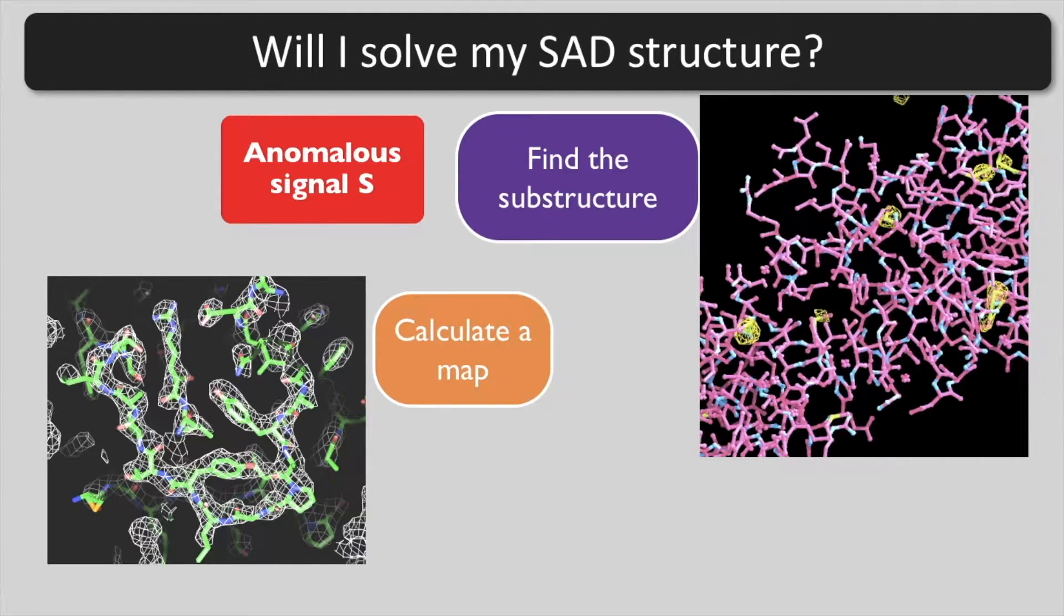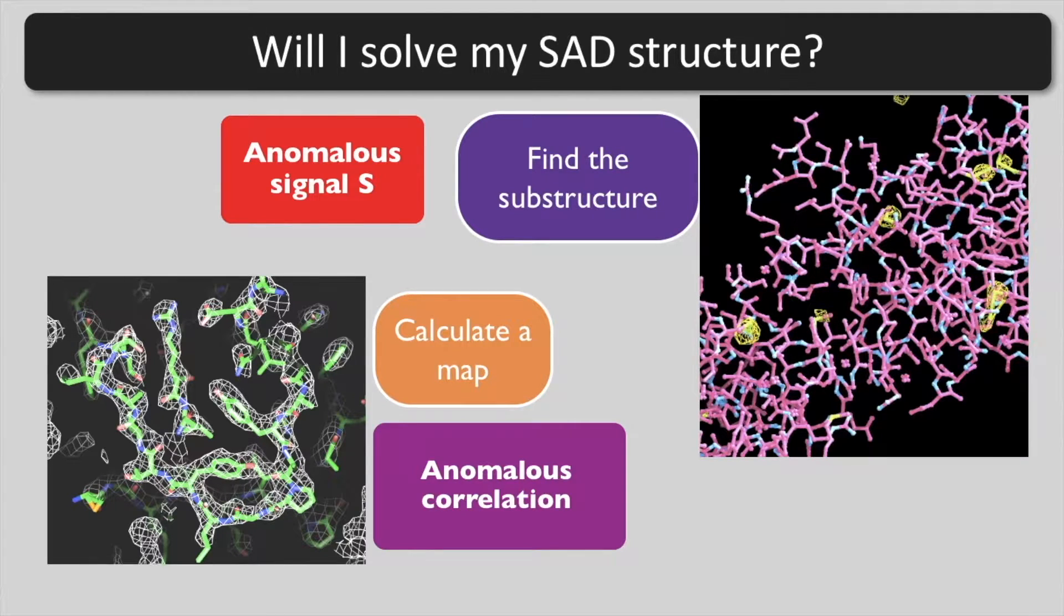The anomalous signal is going to determine your chances of finding the substructure, and the anomalous correlation is going to determine the quality of your map.